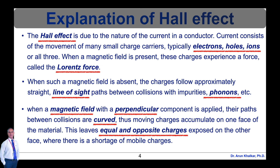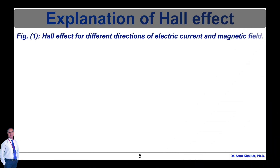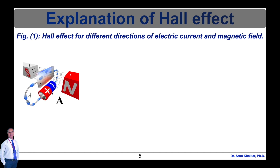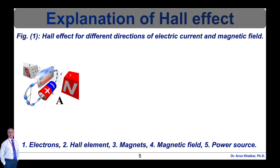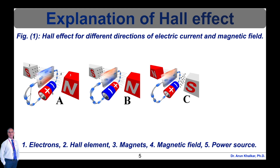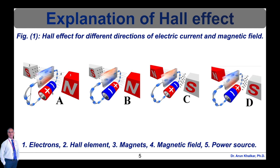Now let's see the explanation of the Hall effect showing different directions of electric current and magnetic field in figure 1. In this figure, 1 stands for electrons, 2 is the Hall element, 3 is the magnet, 4 is the magnetic field, and Phi is the power source. In drawing A, the Hall element takes on a negative charge at the top edge (shown in blue) and positive at the lower edge (shown in red). In figures B and C, either the electric current or the magnetic field is reversed, causing the polarization to reverse. Reversing both current and magnetic field, as in drawing D, causes the Hall element to again assume a negative charge at the upper edge.